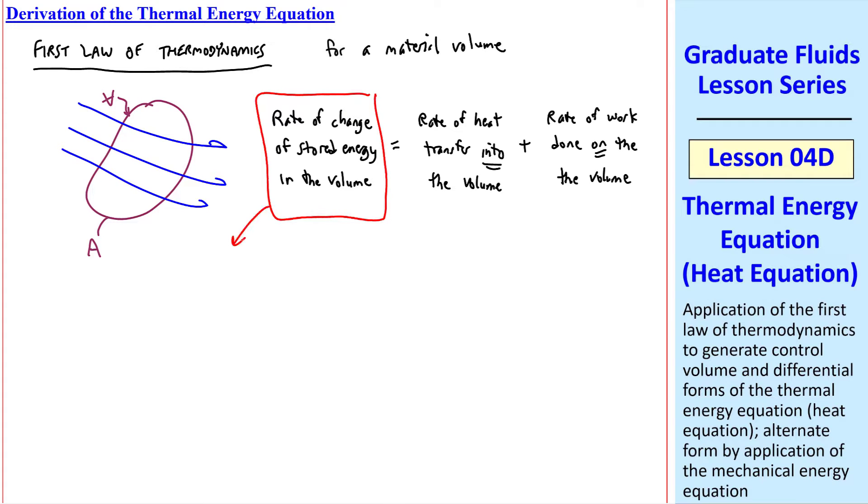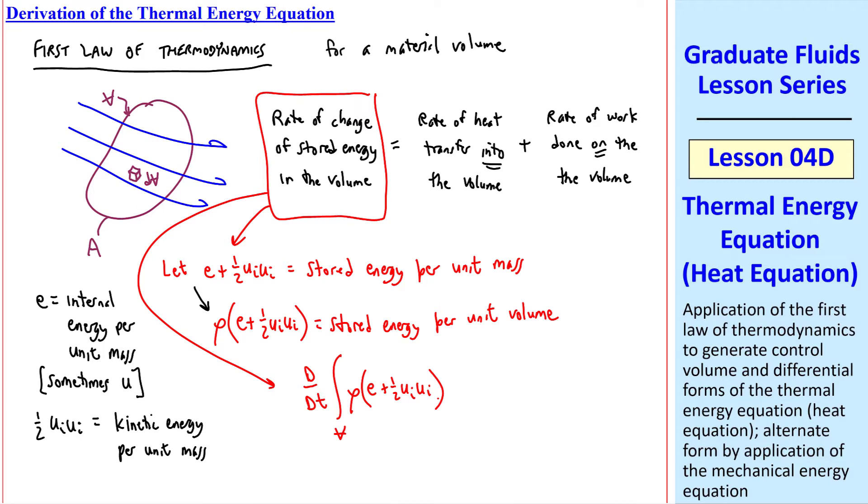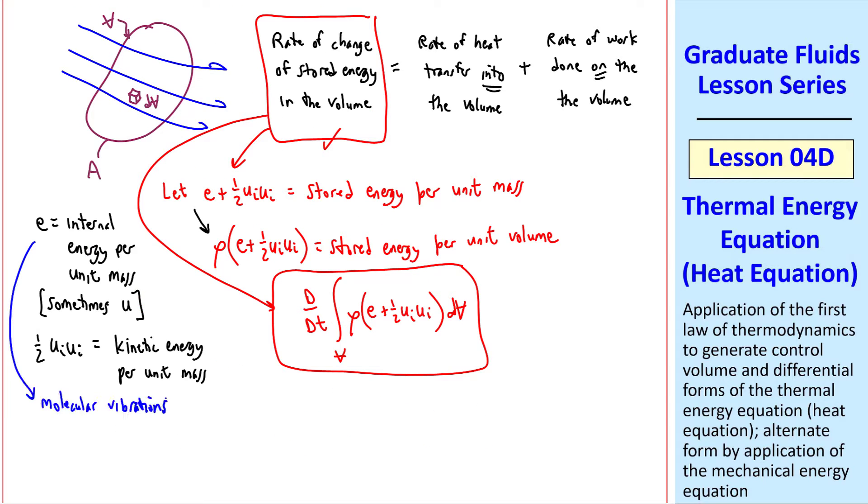Now let's consider each of these terms separately. For the first term, we'll let E plus one-half Ui Ui be the stored energy per unit mass, where in our notation, E is the internal energy per unit mass, often called the specific internal energy. Some authors use U instead of E. We'll use E so as not to confuse our notation with velocity U. Similarly, one-half Ui Ui is the kinetic energy per unit mass, or specific kinetic energy. If we multiply this quantity by rho, we get the stored energy per unit volume. So this term becomes, for our blob of fluid that has some little element of volume dv, d/dt following the fluid volume, since this is a material volume, integral over the volume of rho E plus one-half Ui Ui d volume. That's our first term in this equation. I note that this E includes molecular vibrations, random molecular motion, and molecular rotations. It does not include potential energy, which we'll deal with separately.